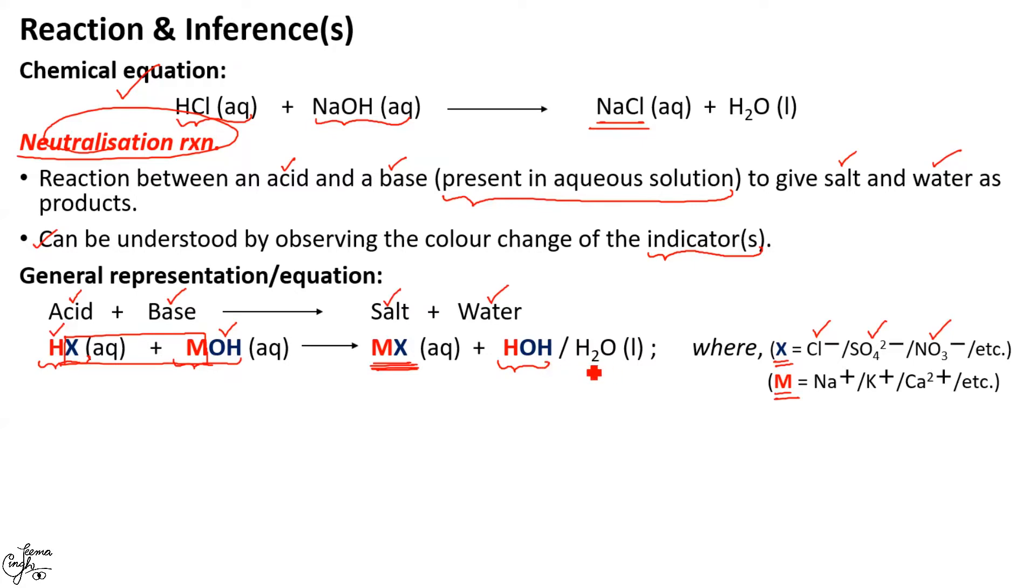Now why is this reaction called as neutralization reaction? This is because generally the salt that is formed, here it is sodium chloride, is found neutral in nature. That is, it won't show any color change with litmus paper or solution, whether your litmus paper is red or blue. I use the word generally because salts in addition to being neutral may be acidic or basic. I will take this later in a separate video on salts.